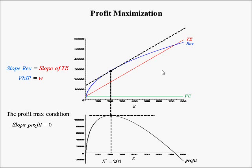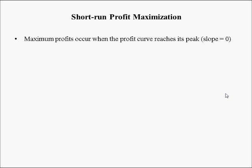The slope of revenue is called the value of marginal product. The slope of total expenses is the wage — the wage is why the expense line increases at a linear rate. Another way to write the value of marginal product is price times the marginal product of labor. Now let's apply equations to this rule. The profit equation is: profit = 2,000×E^0.5 − 3,000×E^0 − 70E. I'm using exponent notation because I'm going to differentiate with respect to E — that's why √E becomes E^0.5.